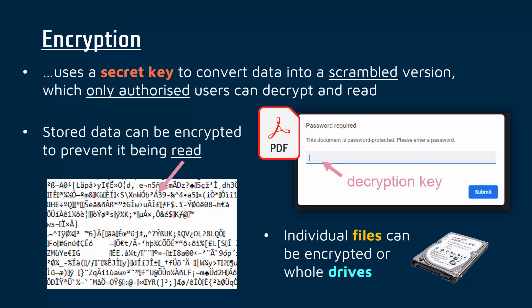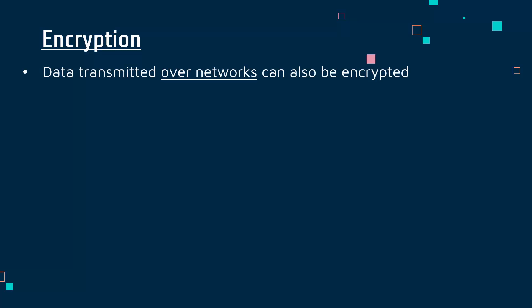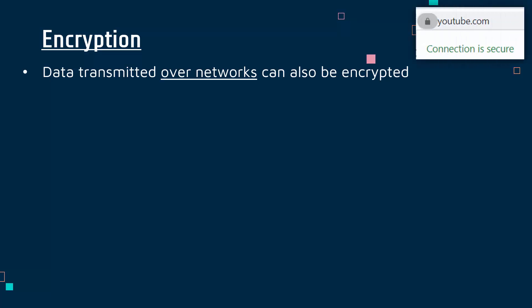This is one application of encryption to what we call data at rest. We can also encrypt data in transit — basically where we are transmitting data over networks. You would have seen at the top of your browser a padlock icon. The padlock tells us that our connection is secure because the data is being encrypted between your computer and whatever website you are on. So here, the connection between me and YouTube is secure because all data being sent back and forth has been encrypted.